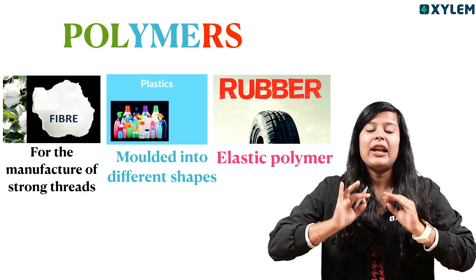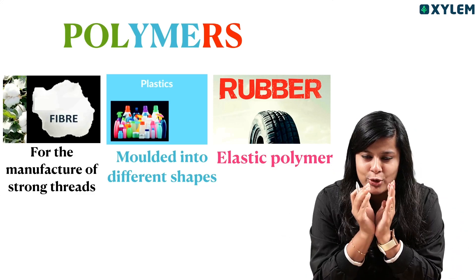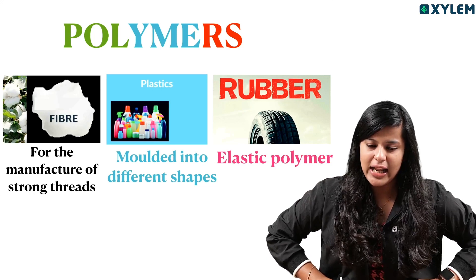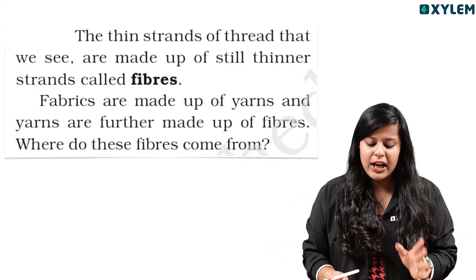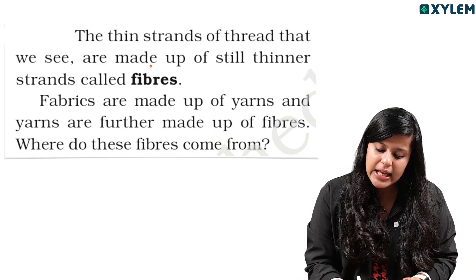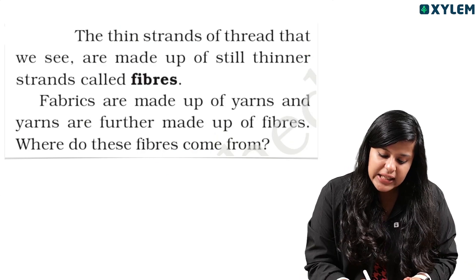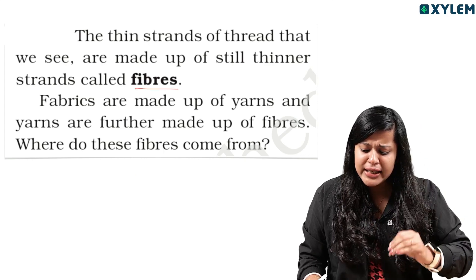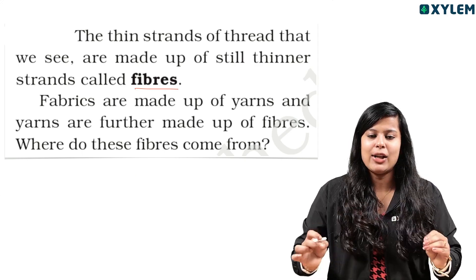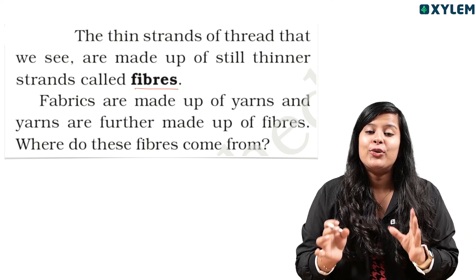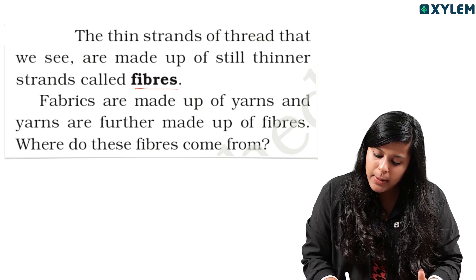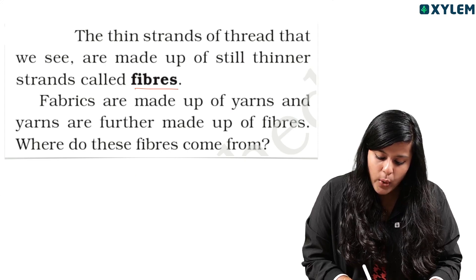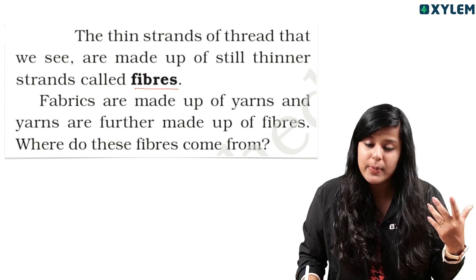Now we will discuss fiber in detail. The thin strand of thread that we see are made up of still thinner strands — these are called fibers. Fibers are very thin strands. Fabrics are made up of yarns and yarns are further made up of fibers. Where do these fibers come from?